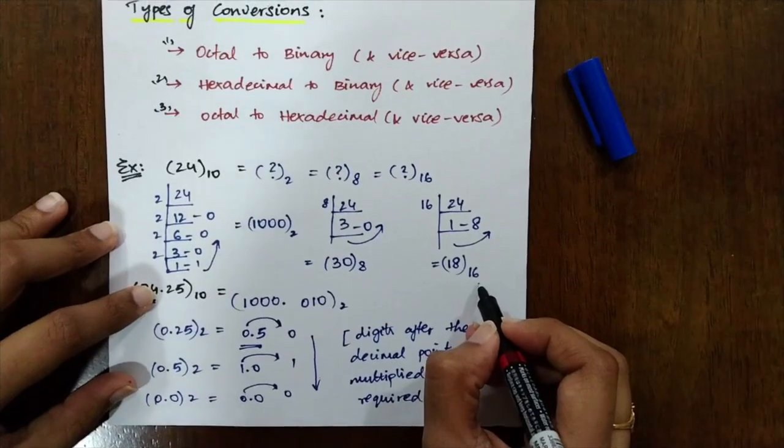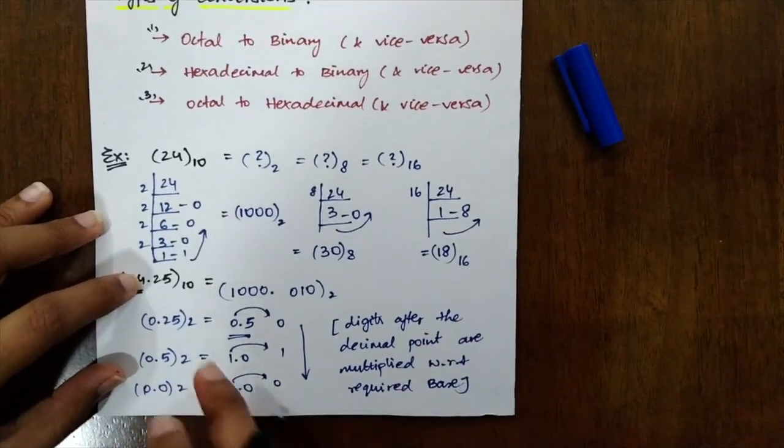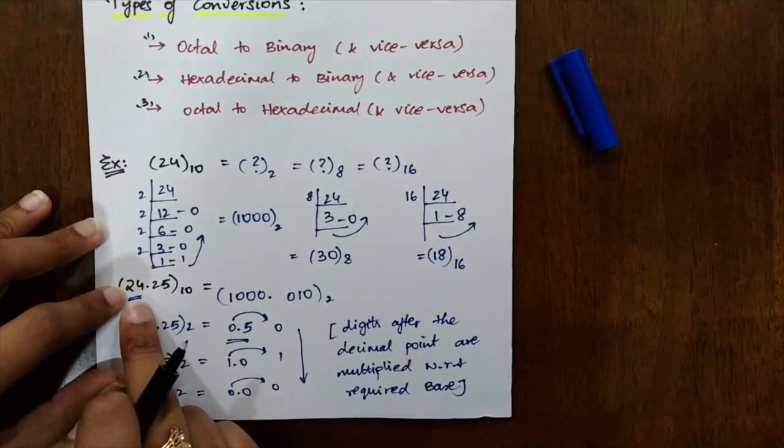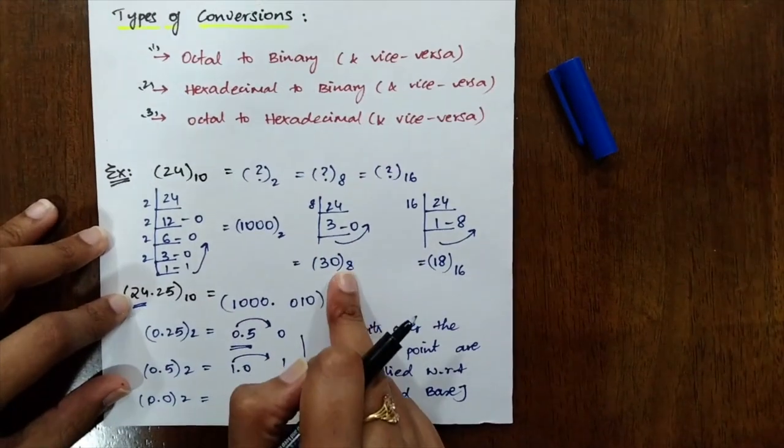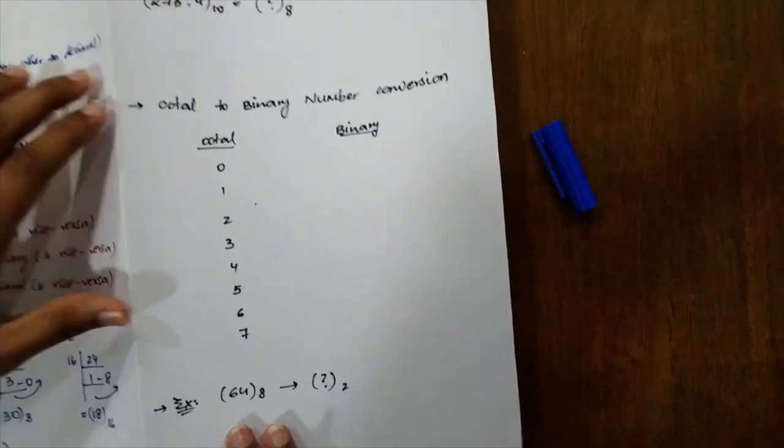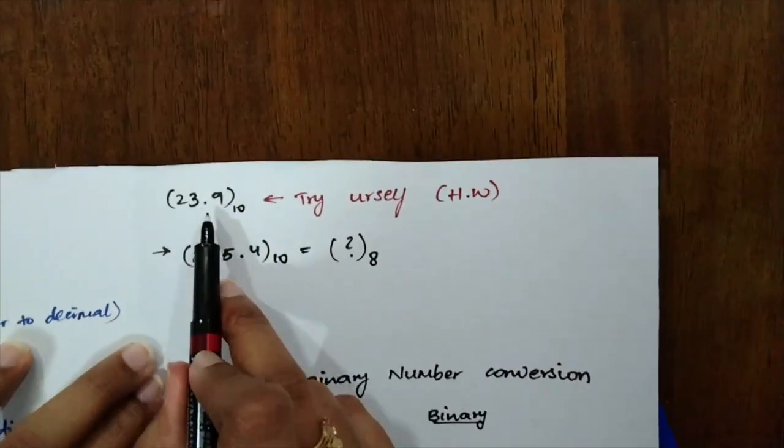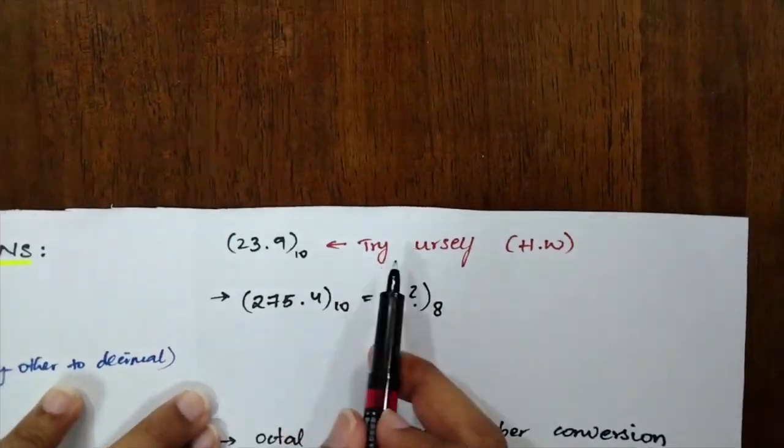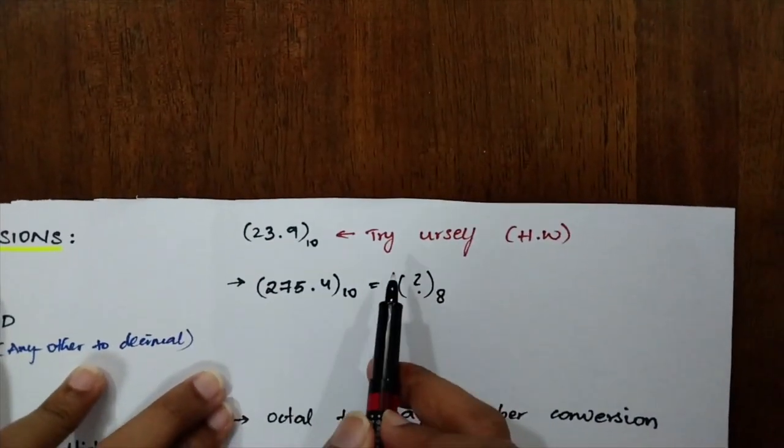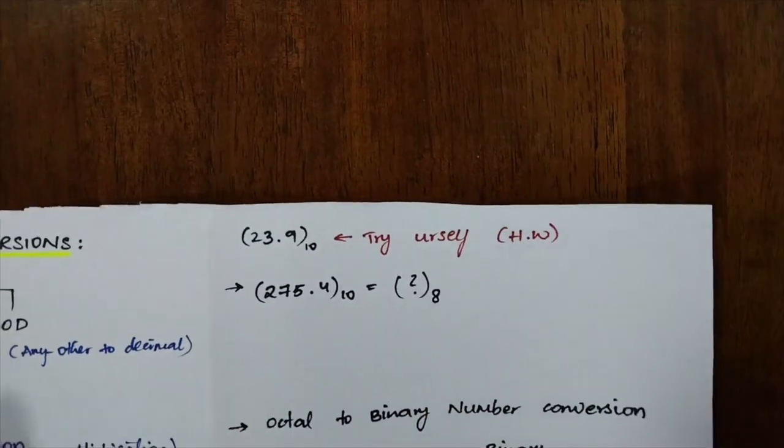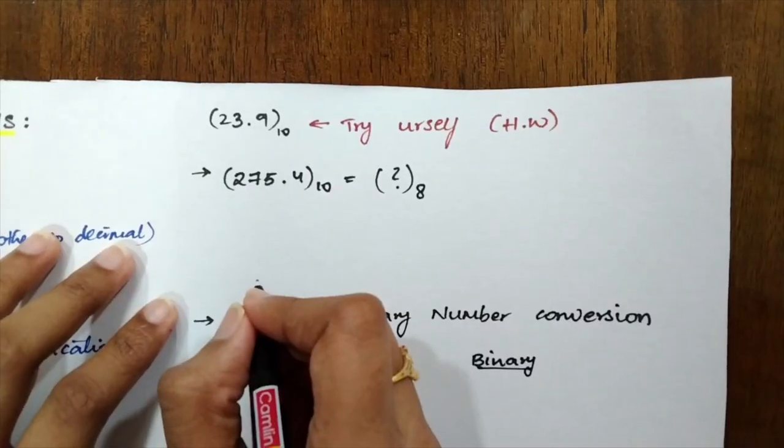Try solving for the decimal conversions into octal as well as hexadecimal. I really want you to try this 23.9 into all of them. Just try doing it yourself and you will be having a greater idea.